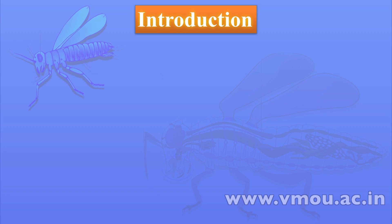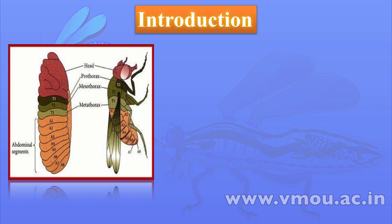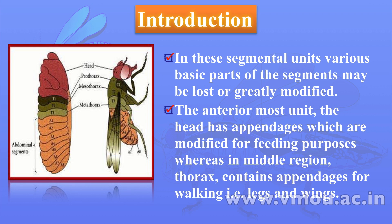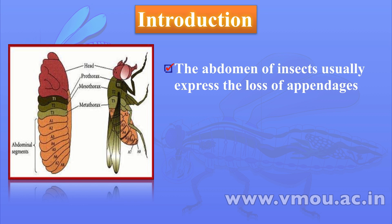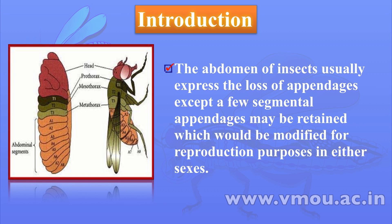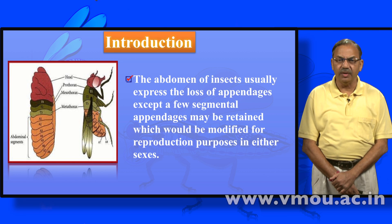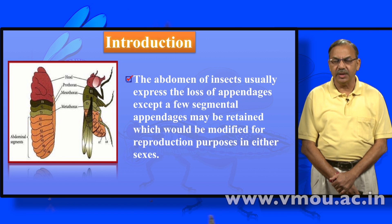In these segmental units, various parts of the segments may be lost or greatly modified. The anterior-most unit, the head, has appendages which are modified for feeding purposes. Whereas in the middle region, the thorax contains appendages for walking — that is, legs and wings. The abdomen of insects usually shows loss of appendages, except a few segmental appendages may be retained, which are modified for reproduction purposes in either sex.